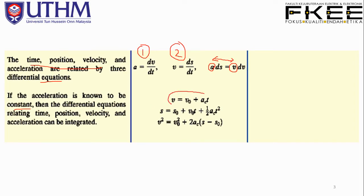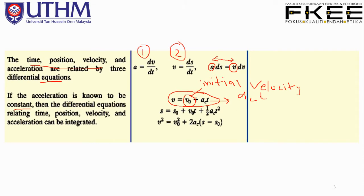When acceleration is constant, you can see the relationship: v = v₀ + a_c·t, where v₀ is the initial velocity at time zero, and a_c is constant acceleration. The differential equations relating time, position, velocity, and acceleration can then be integrated directly.